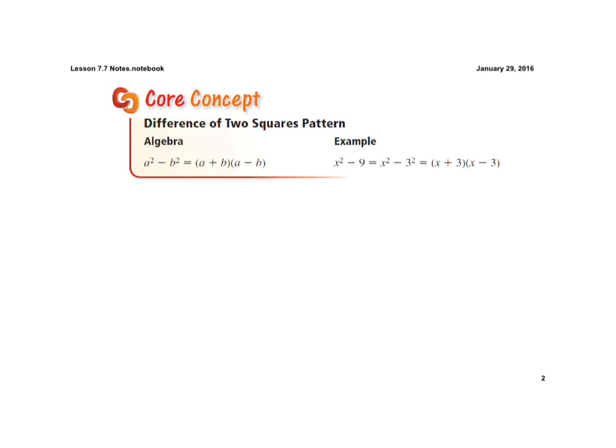First of all, we're going to look at the pattern for the difference of two squares. If you recall, we've already worked with multiplying binomials that are identical, except one is a sum and the other is a difference. Remember, now you're going to be given this, and you have to be able to come up with those two binomials.